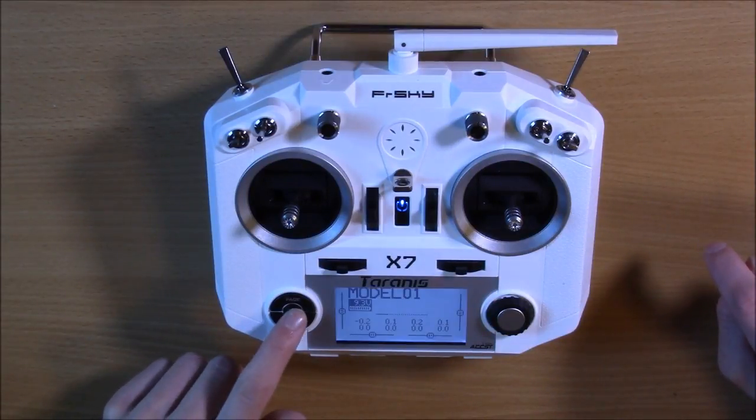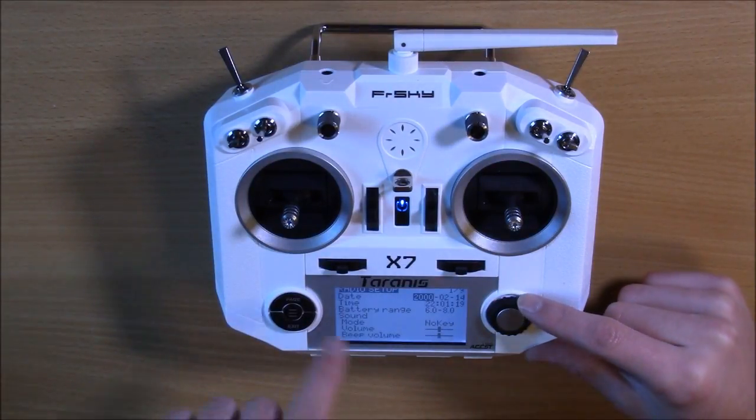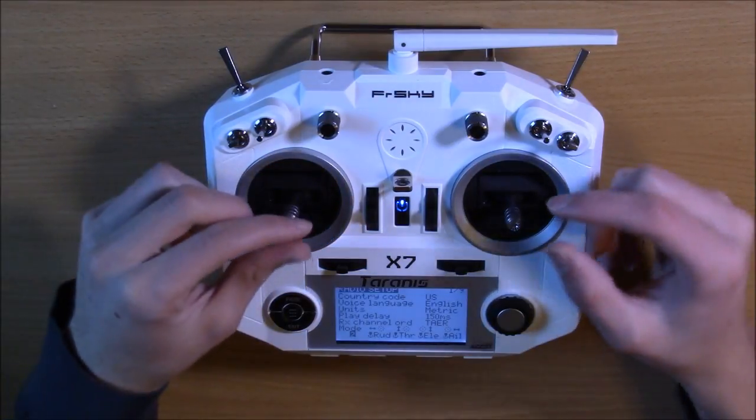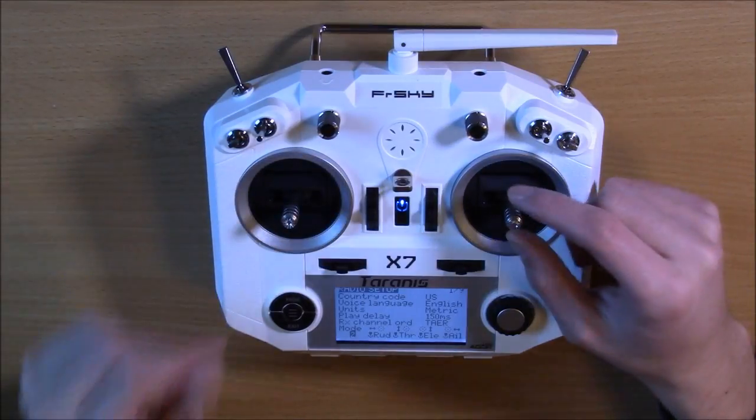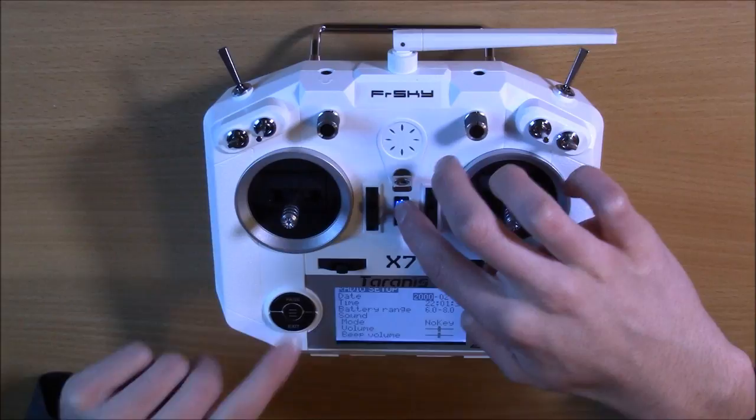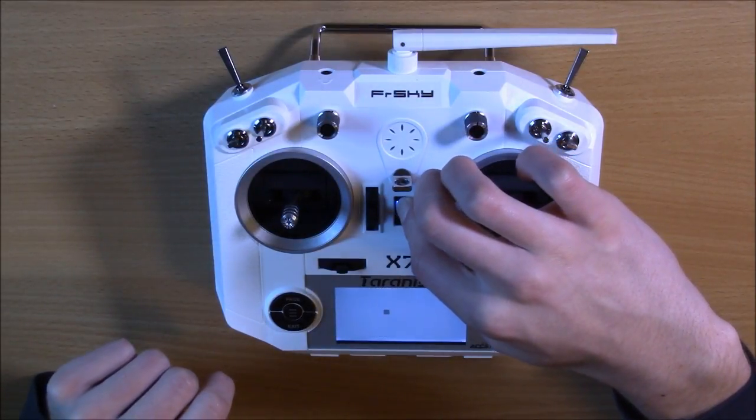So you're going to hold down on the middle button. Instead of scrolling all the way to the bottom, scroll just once to the left, and you'll get to mode. And you see I already have it correct, where left, right, rudder, up, down, throttle, elevator, and aileron right there. So you're good there. Then you just want to turn that baby back off.